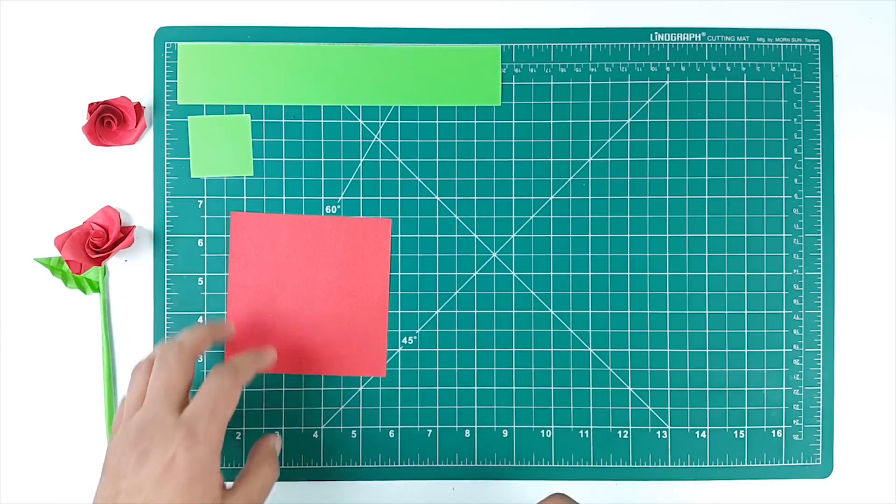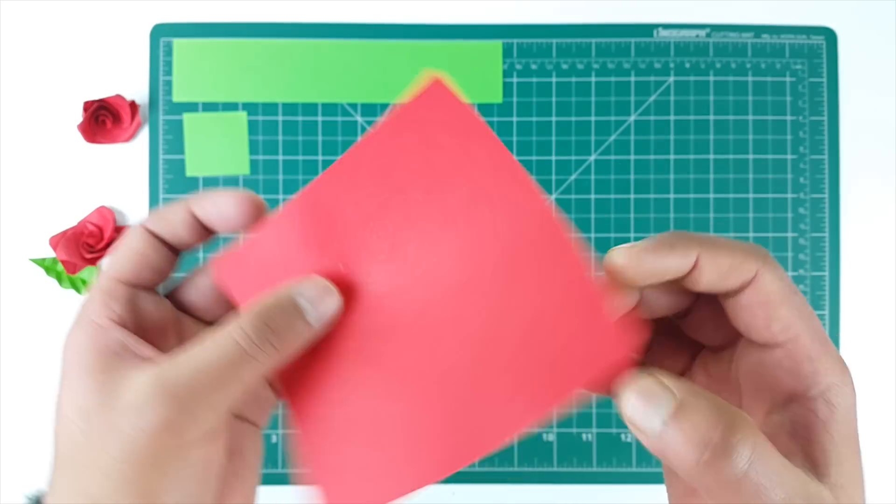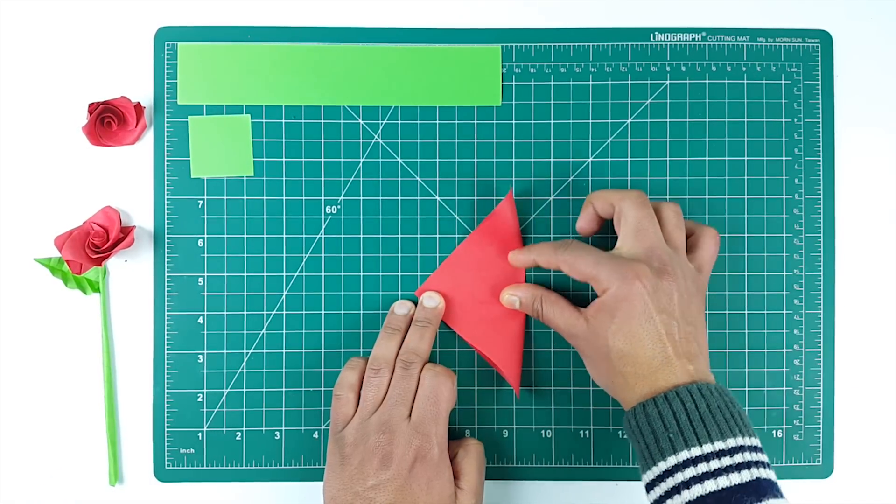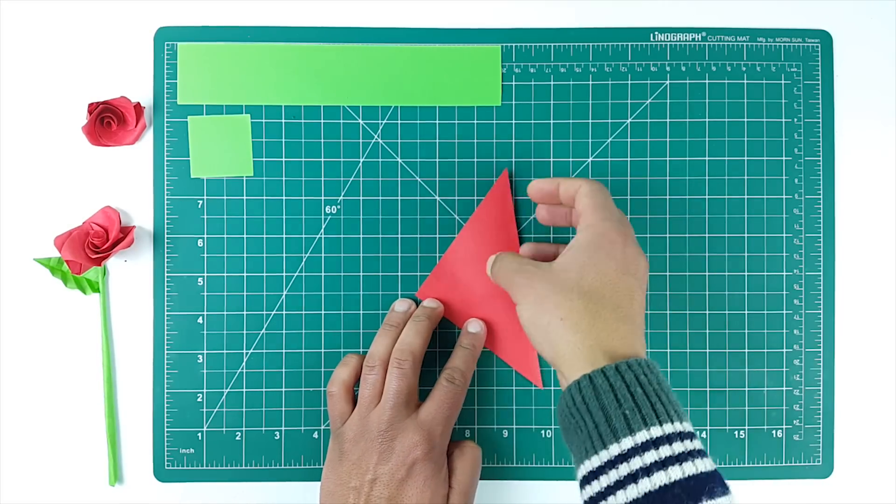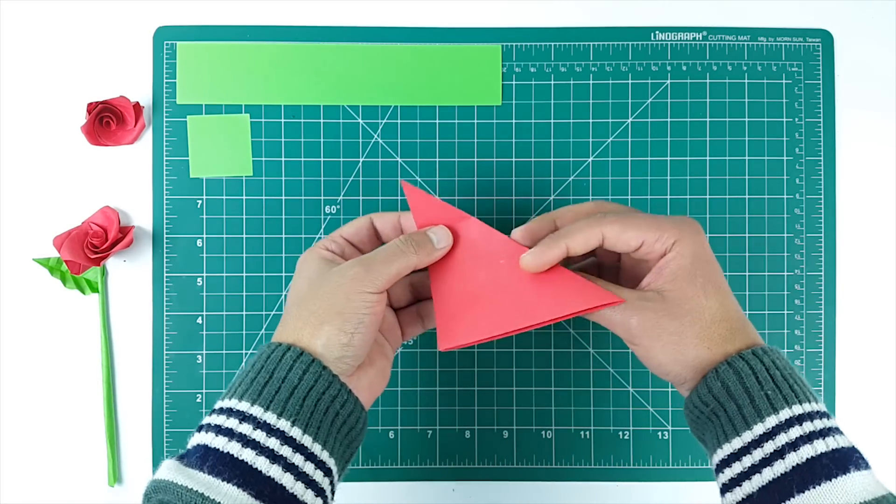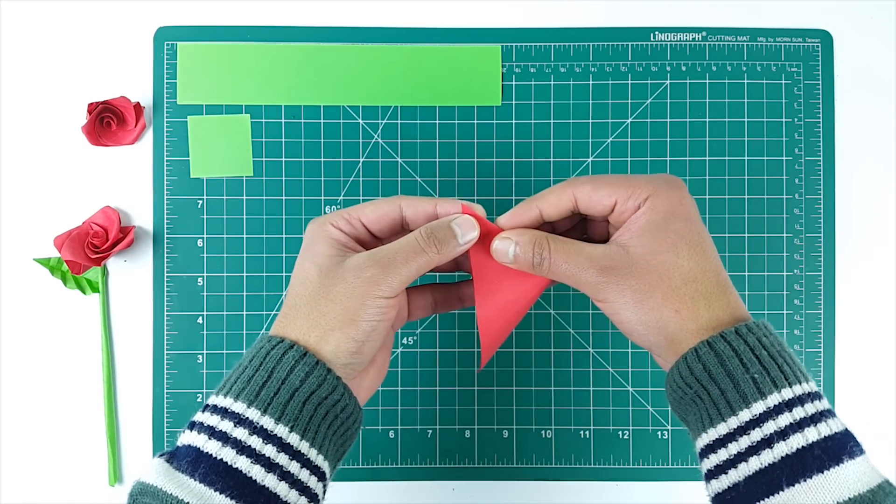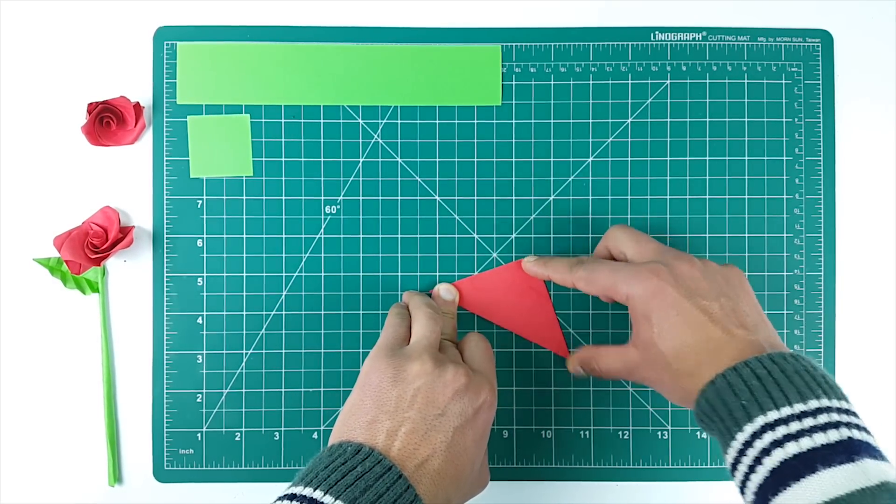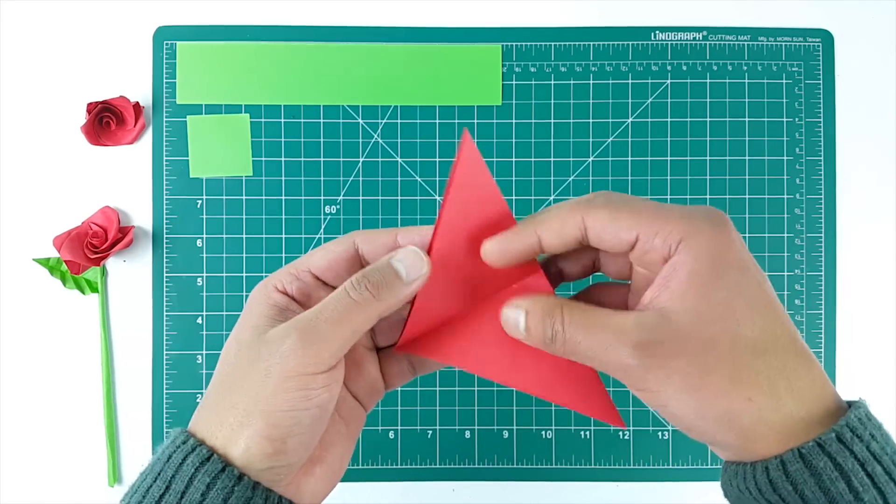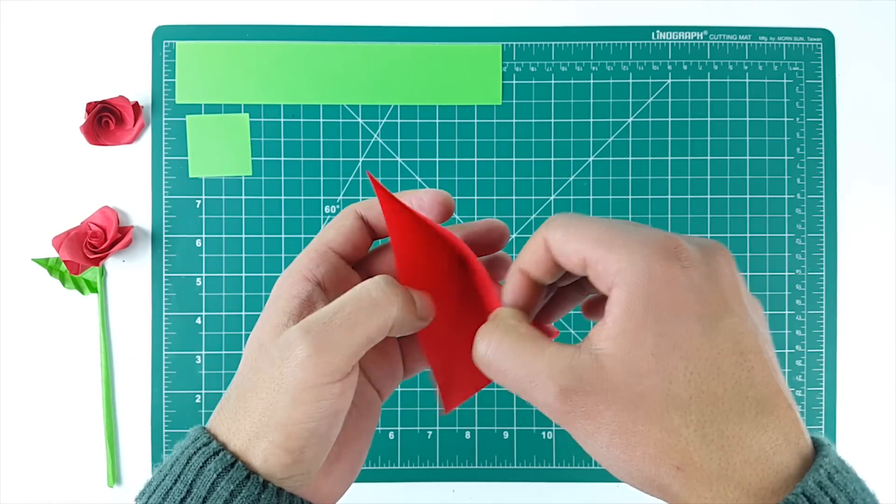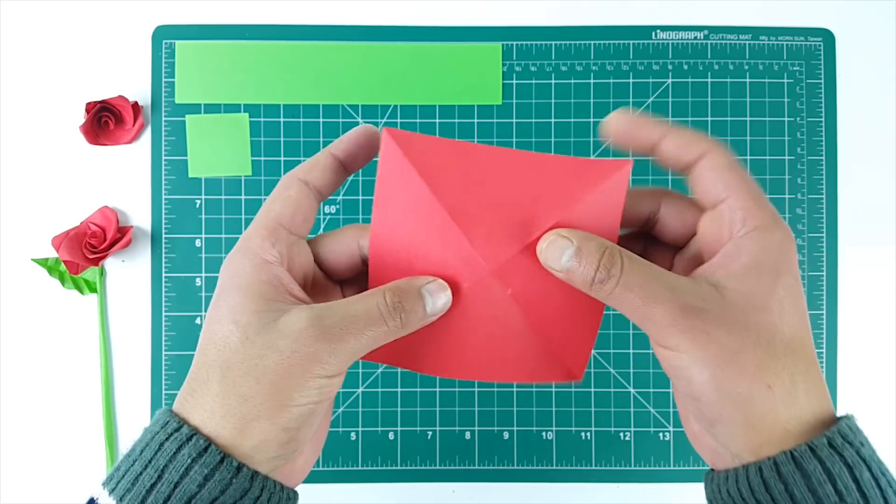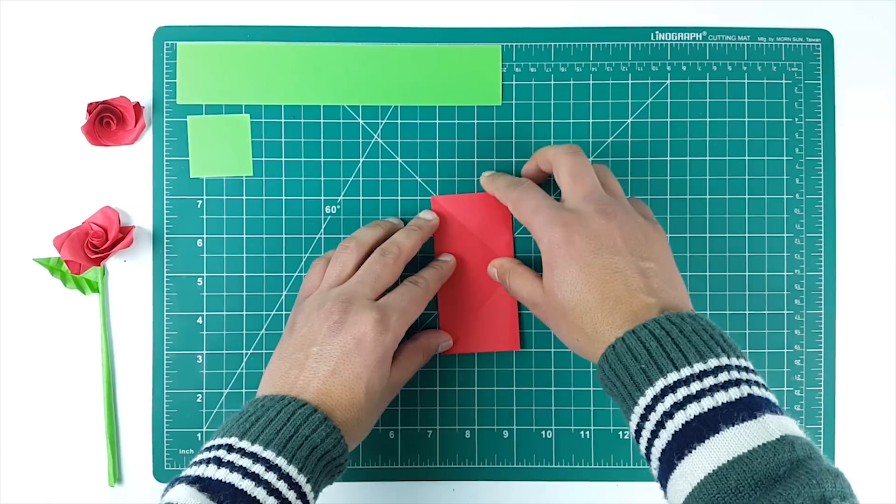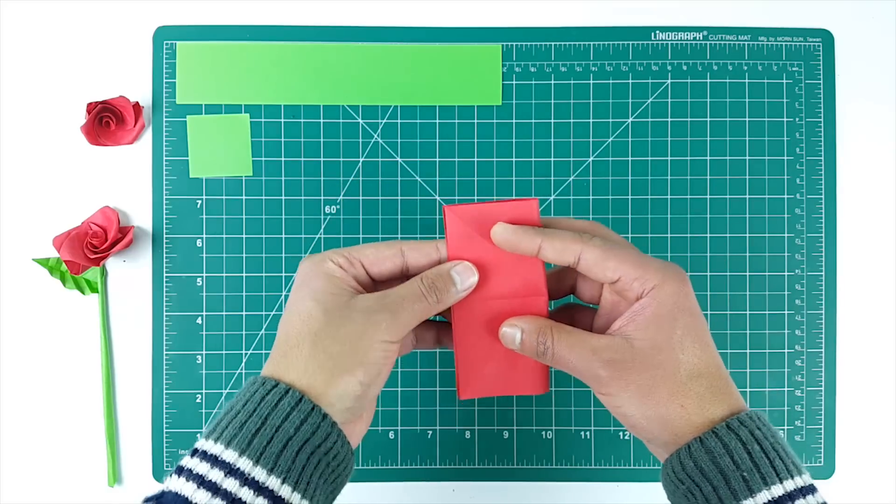So first of all we will make the rose. Fold the paper from its diagonal. Repeat for the other side. Now fold it in half. Again repeat for the other side.